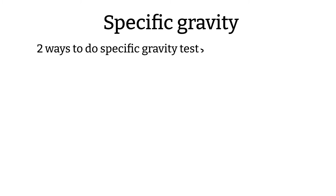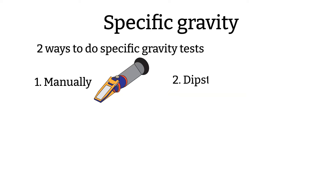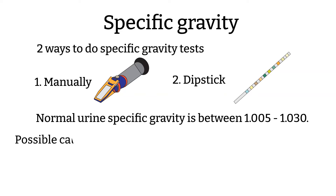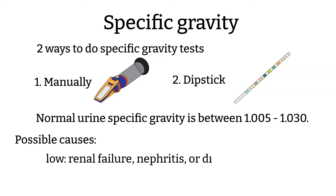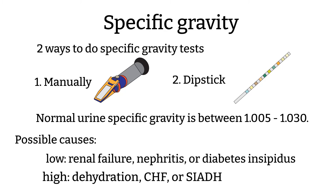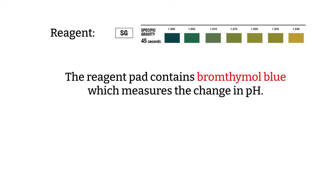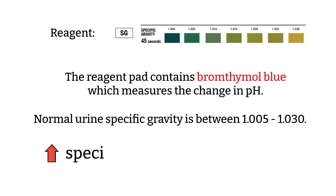Specific gravity. We have talked about specific gravity before in the physical part of urine analysis, because there are two ways to perform this test — one way is to manually perform this test, and another way is as part of the dipstick. Specific gravity tells us how dilute or concentrated the urine is, giving a decent indicator of hydration status. Low specific gravity often indicates renal failure or diabetes insipidus, whereas high specific gravity indicates dehydration. The reactions for specific gravity should be read at 45 seconds. The reagent pad contains a pH indicator that measures the pH change as the urine increases or decreases its specific gravity.